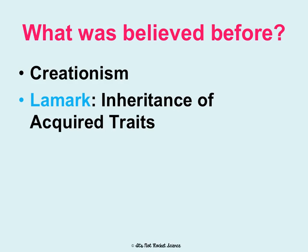Lamarck came up with the idea of the inheritance of acquired traits. He basically thought that organisms could evolve in their lifetime. This may sound silly, but genetics as we know it was not around when he was. He thought that if organisms changed in their lifetime, the traits they acquired would be passed on to their kids. For instance, giraffes have gotten such long necks because in their lifetimes they would stretch their necks and then pass on a longer, more stretched neck to their children.